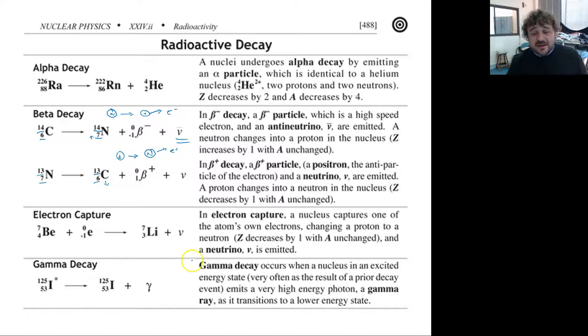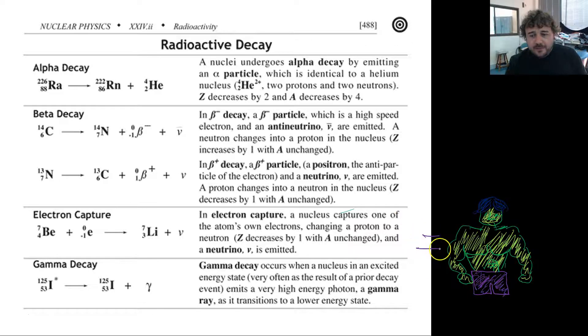Now basically, gamma decay occurs with one of these guys. It can occur with both alpha and beta decay. And what it does is, as the atom starts out all excited because it's lost a particle, and as it calms down, it releases a photon of light. High energy photon, very high energy, and it's called a gamma ray. And these are quite destructive. They made the Hulk, so that's, you know, that's an issue. So essentially, gamma radiation can equal the Hulk, and that's not cool.